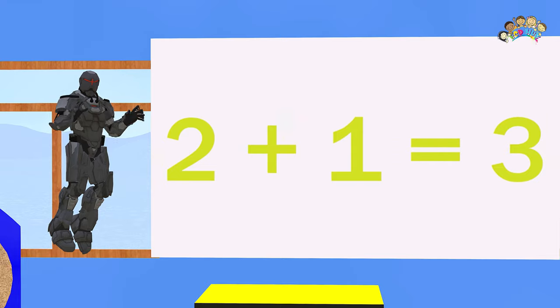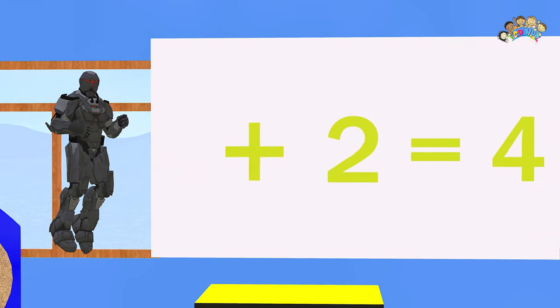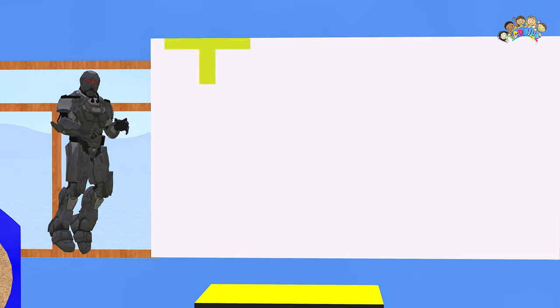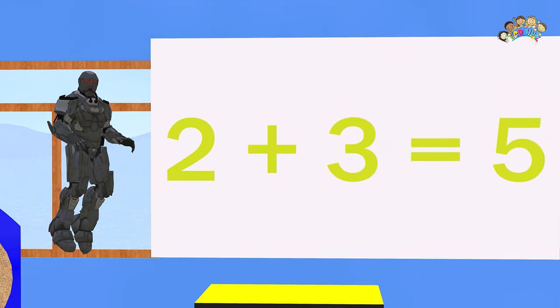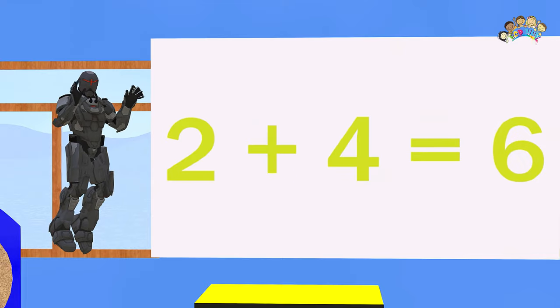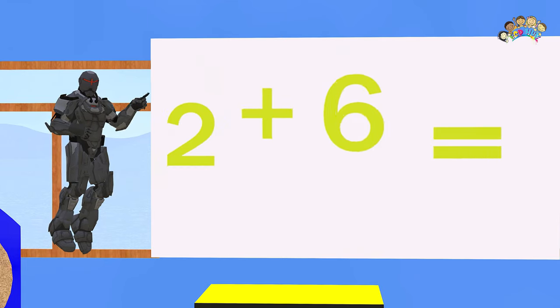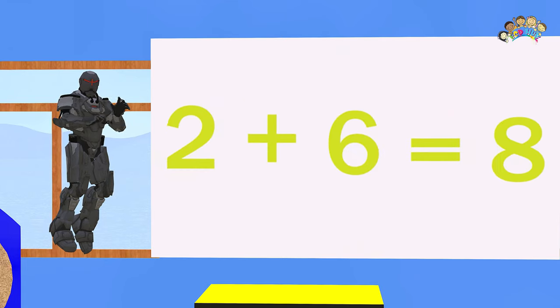Let's move on to the twos. Two plus one is three. Two plus two is four. Two plus three is five. Two plus four is six. Two plus five is seven. Two plus six is eight.